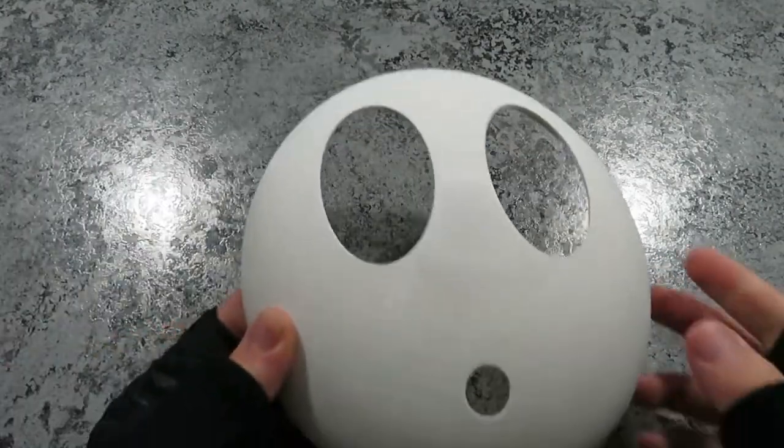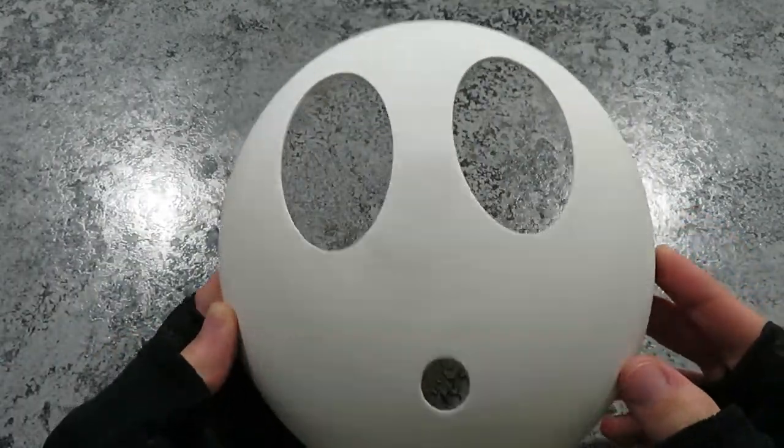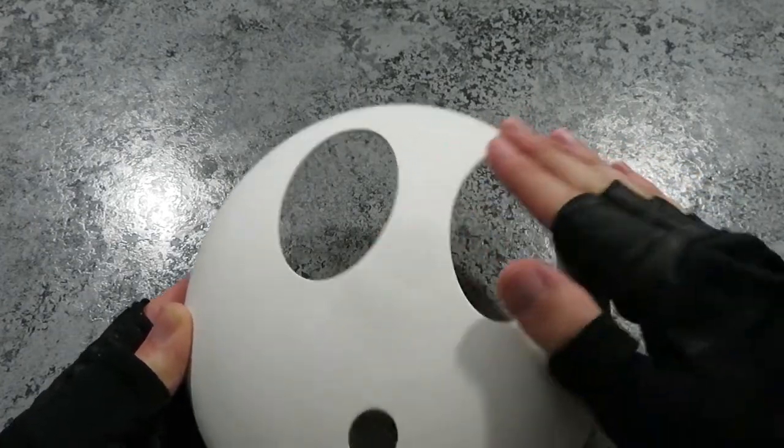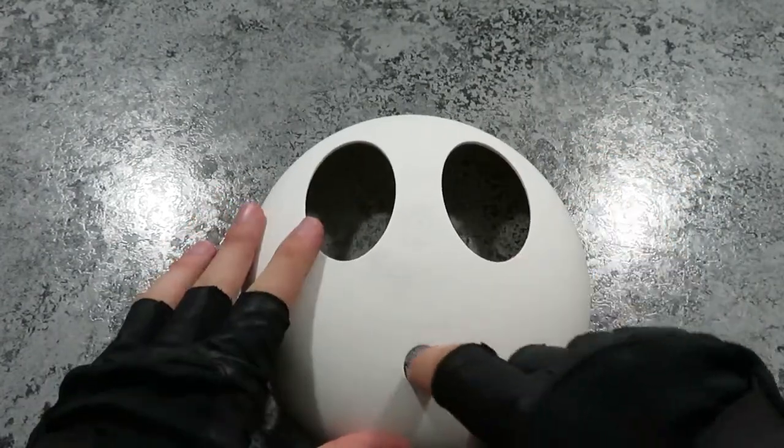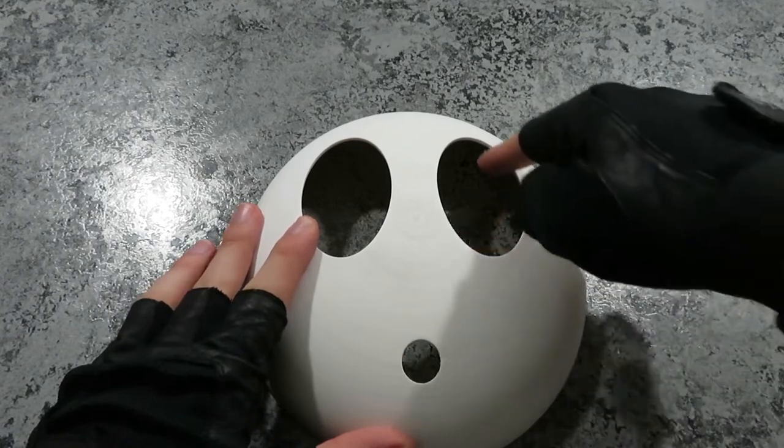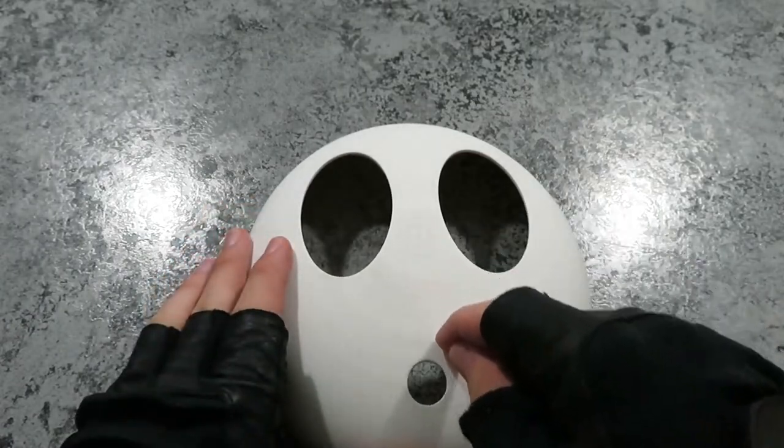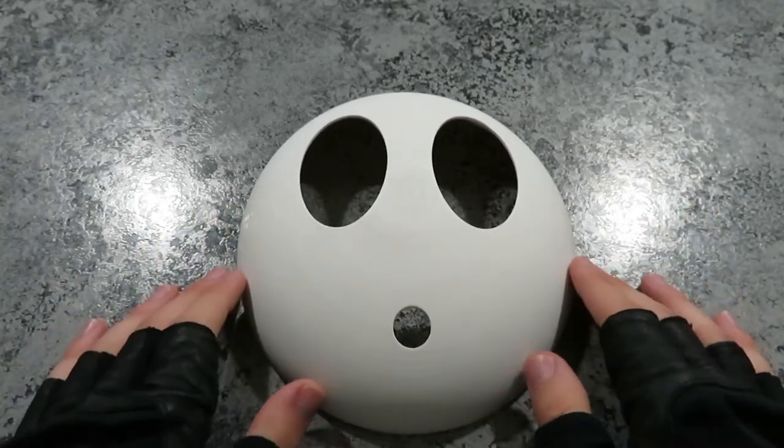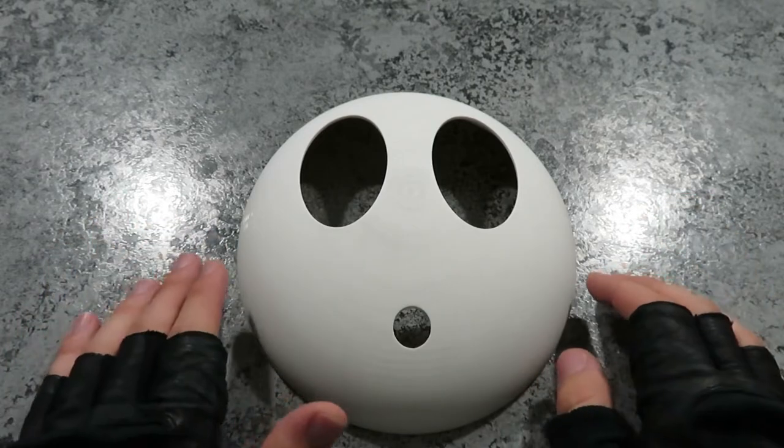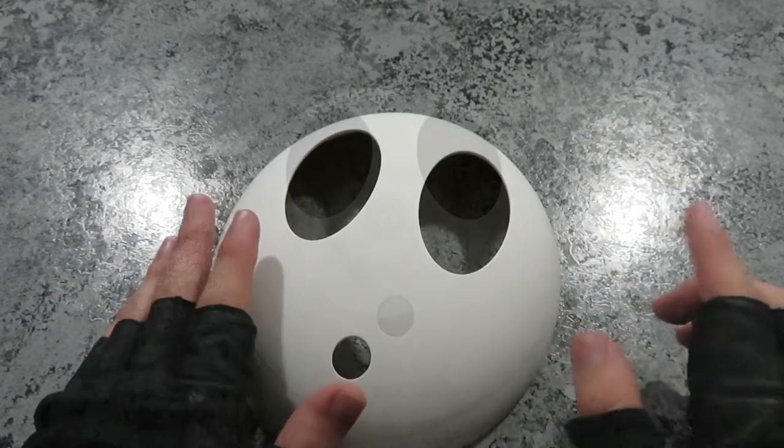When you're finished sanding, your mask should look a little something like this. Those high rises on the nose are now nice and level, and all the sharp areas are gone. You may notice, however, that if you were to run your nail over the mask, it still makes a bit of a scratching sound, meaning that it's not completely smooth. That's where the next step comes in.